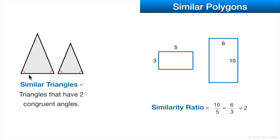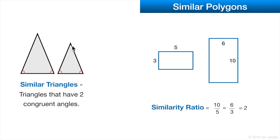We established that all of the angles within two polygons must be congruent for the two polygons to be similar. With triangles, we only need to prove that two angles are congruent, because if two angles are congruent and we know that all three angles add up to 180, we know that the third angle is also going to be congruent.